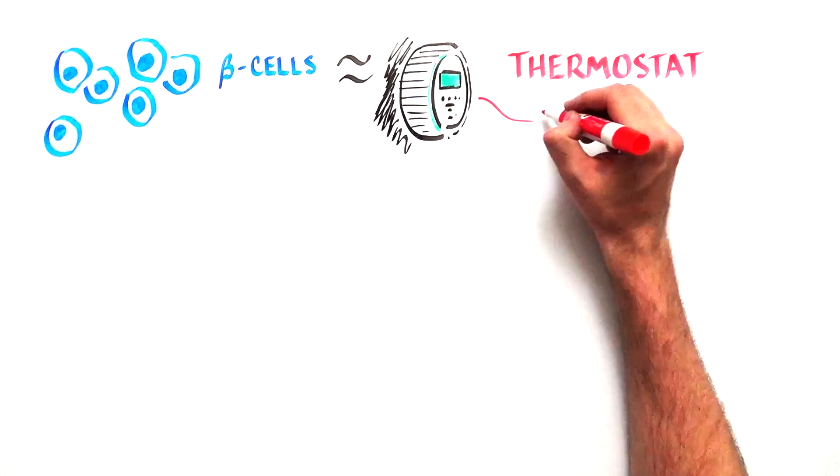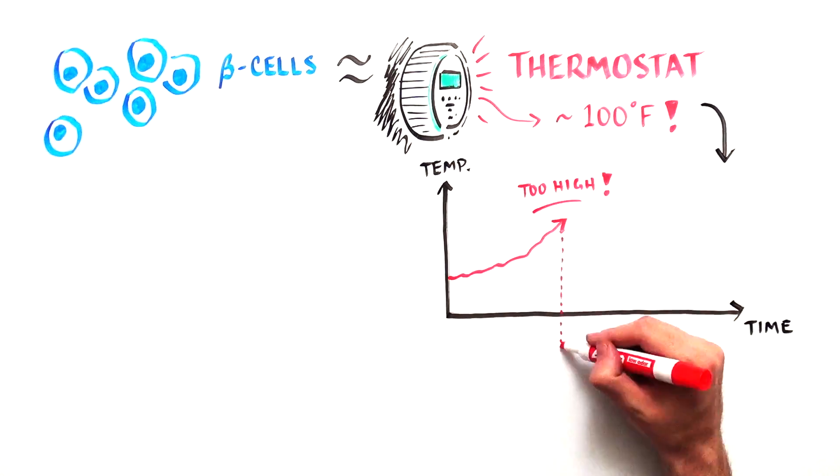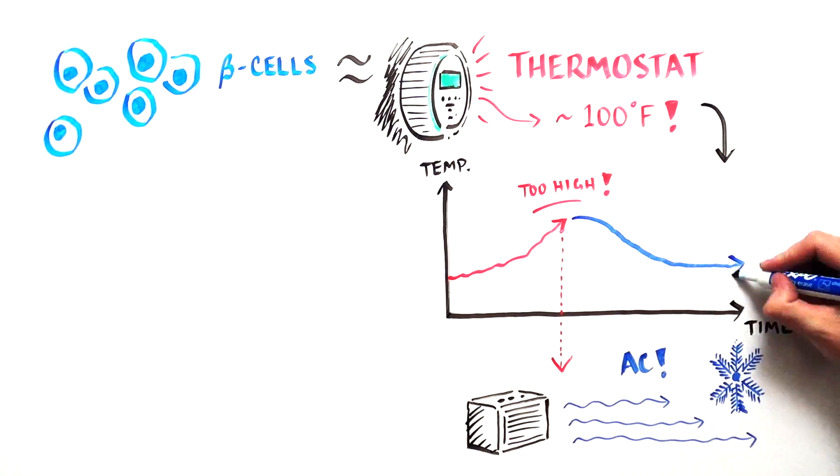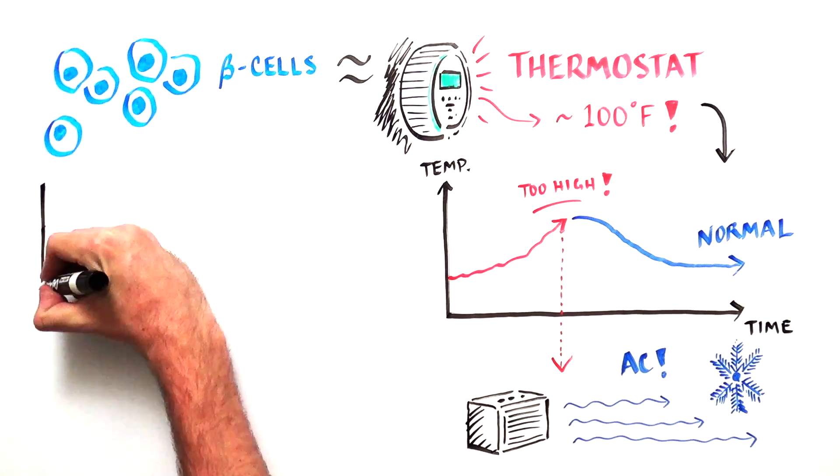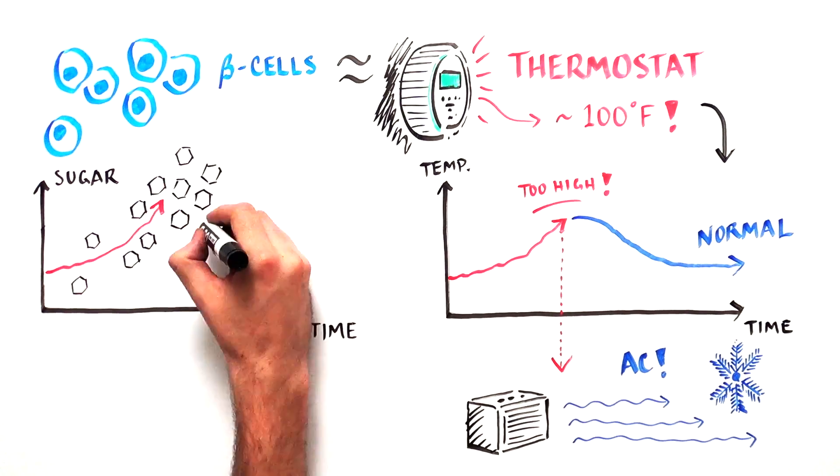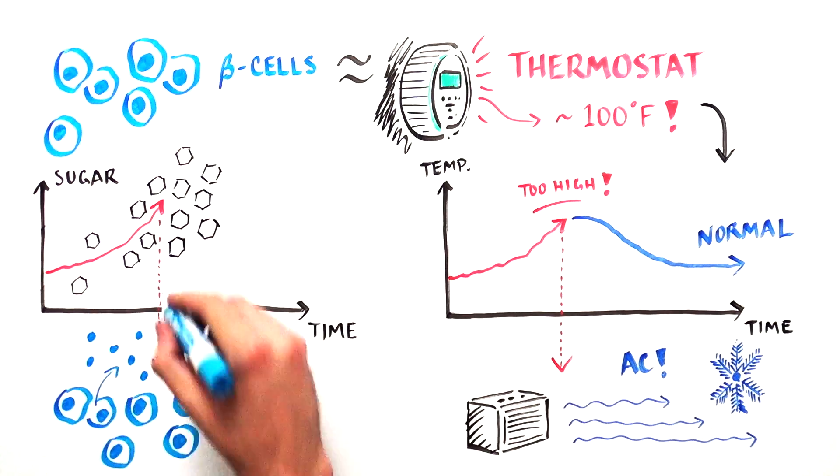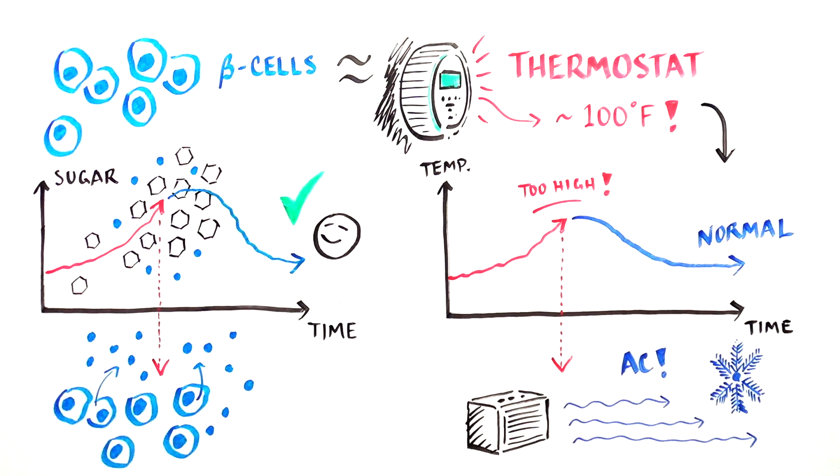Beta cells respond to blood sugar levels similar to a thermostat. When the temperature gets uncomfortably high, the air conditioner turns on to bring the room back to a normal temperature. When blood sugar levels get too high, beta cells turn on and produce insulin, which will reduce blood sugar levels.